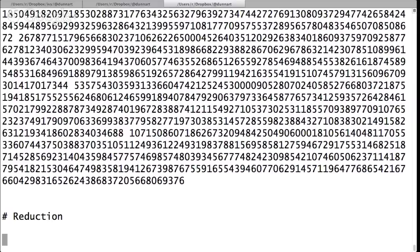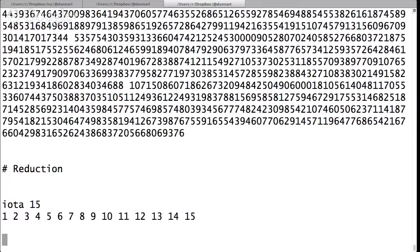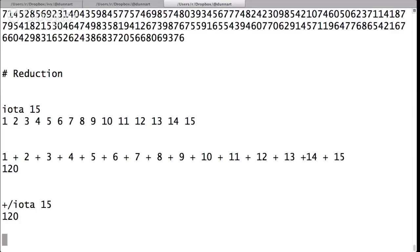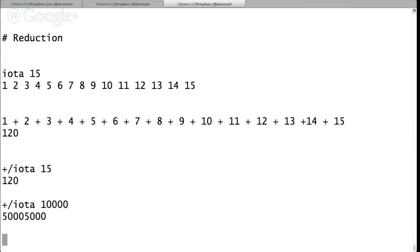Then there's this idea of reduction. If you have a binary operator, you can distribute it through a vector. So here's iota 15, the first 15 numbers. If I put a plus sign in between all of them, it adds them all up, and that gives you 120. But there's the notation for that, which is plus slash, which means distribute plus through the vector. So that's a very efficient way to add up the first 15 numbers.